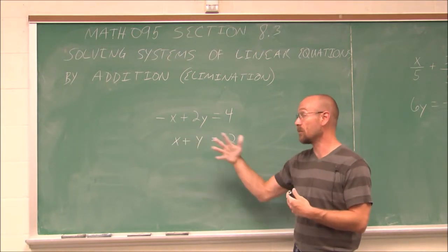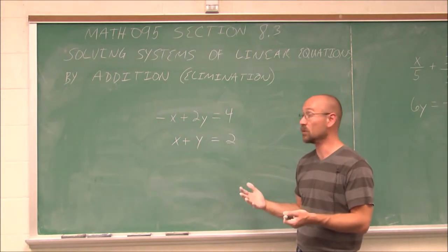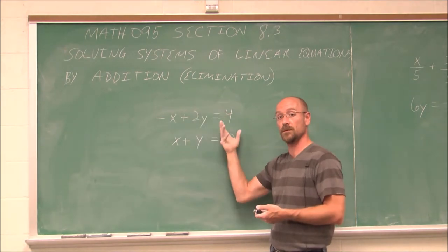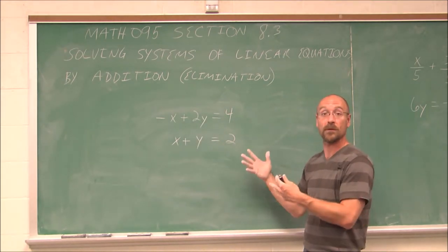If not, we'd have to employ a method to change those coefficients by multiplying through by some number. And we just use that property of equality. What we do to one side, we do to the other. So we can change up the equation to fit whatever we need it to.